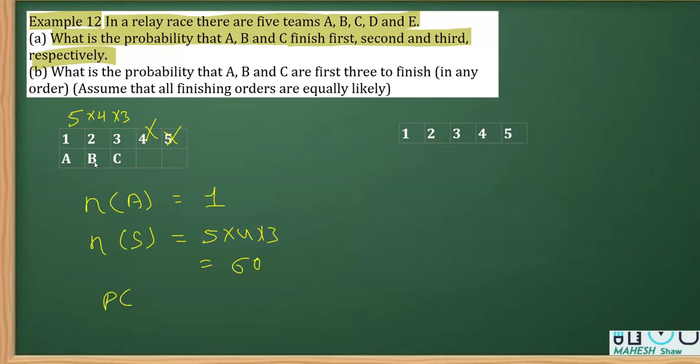Therefore, the probability is N(A) divided by N(S), which is favorable outcomes over total possible outcomes. This gives us 1/60.